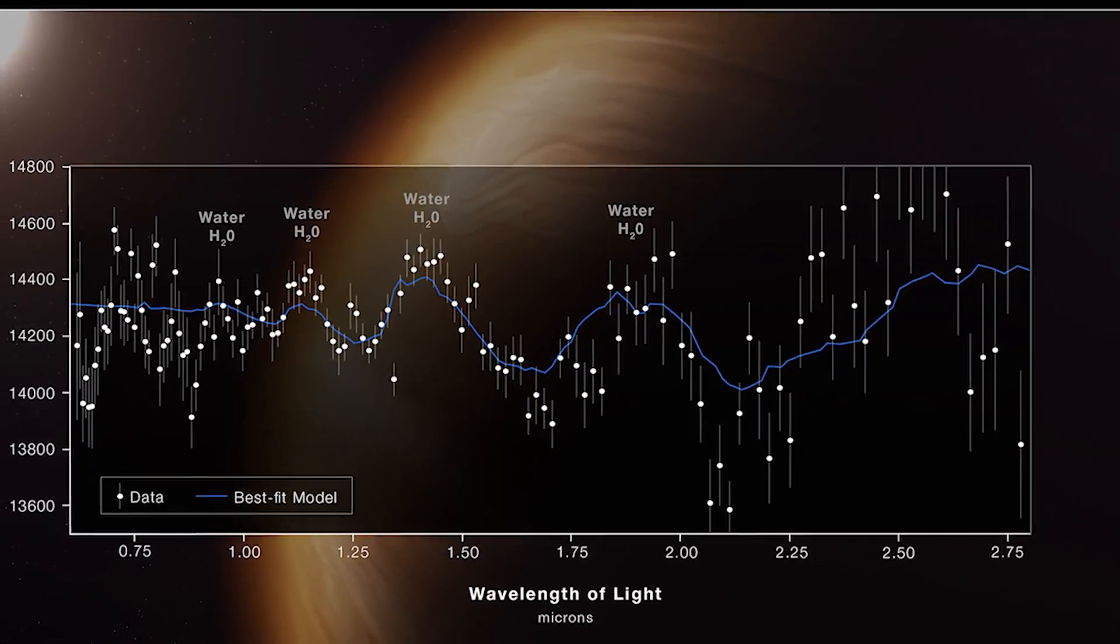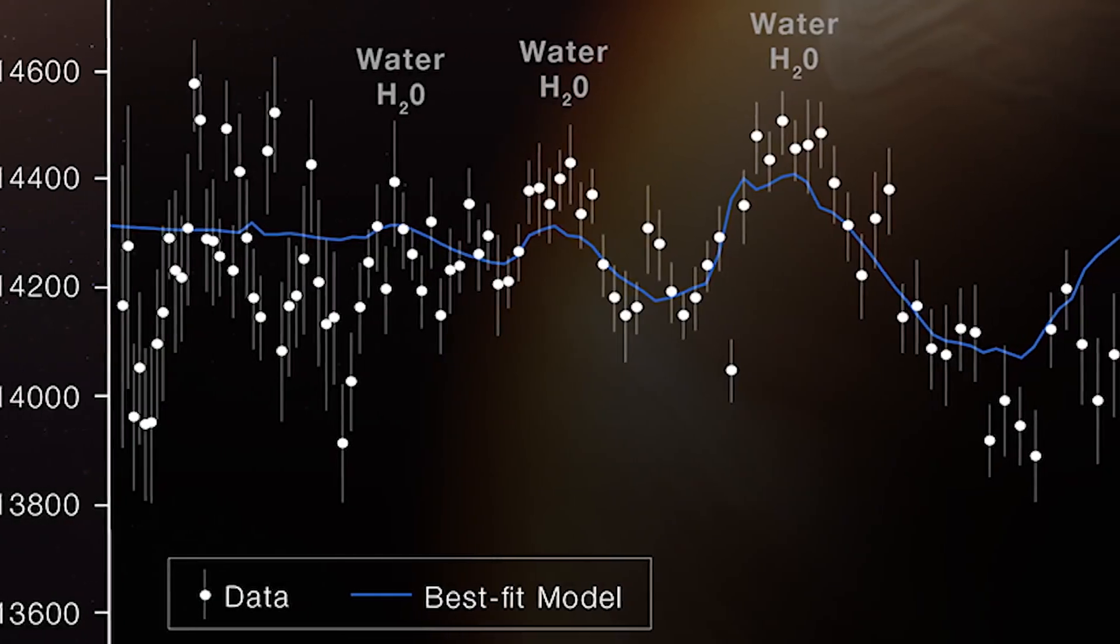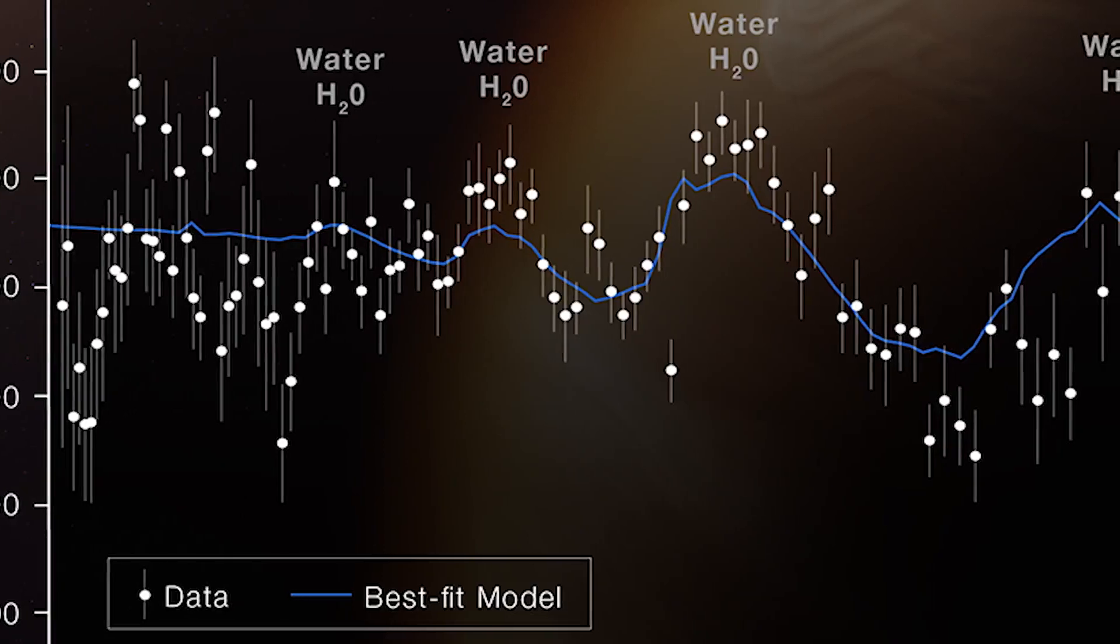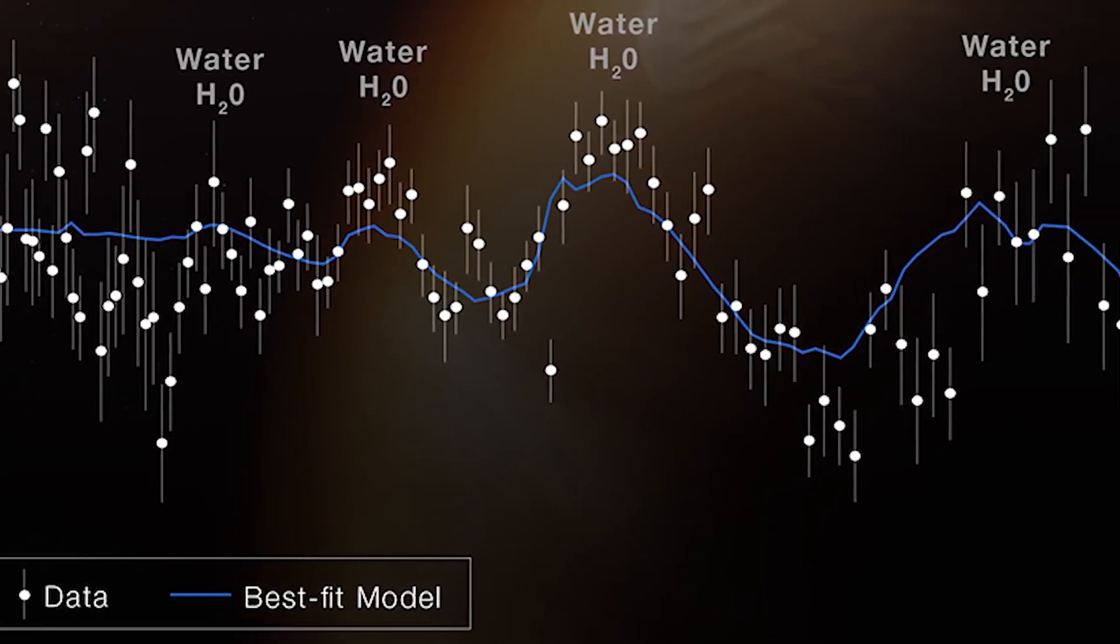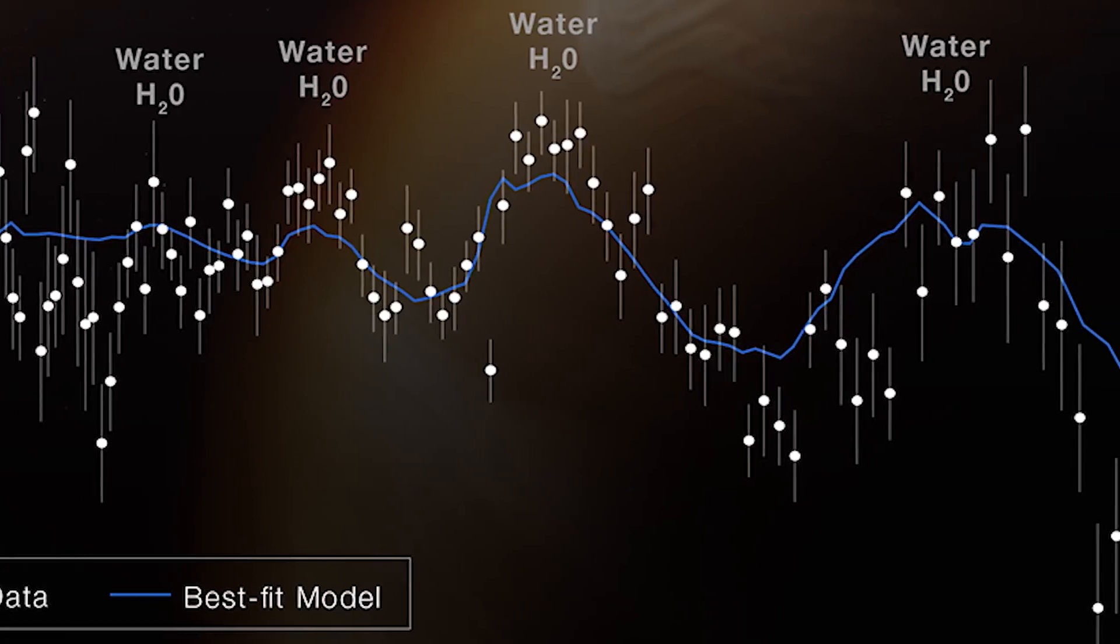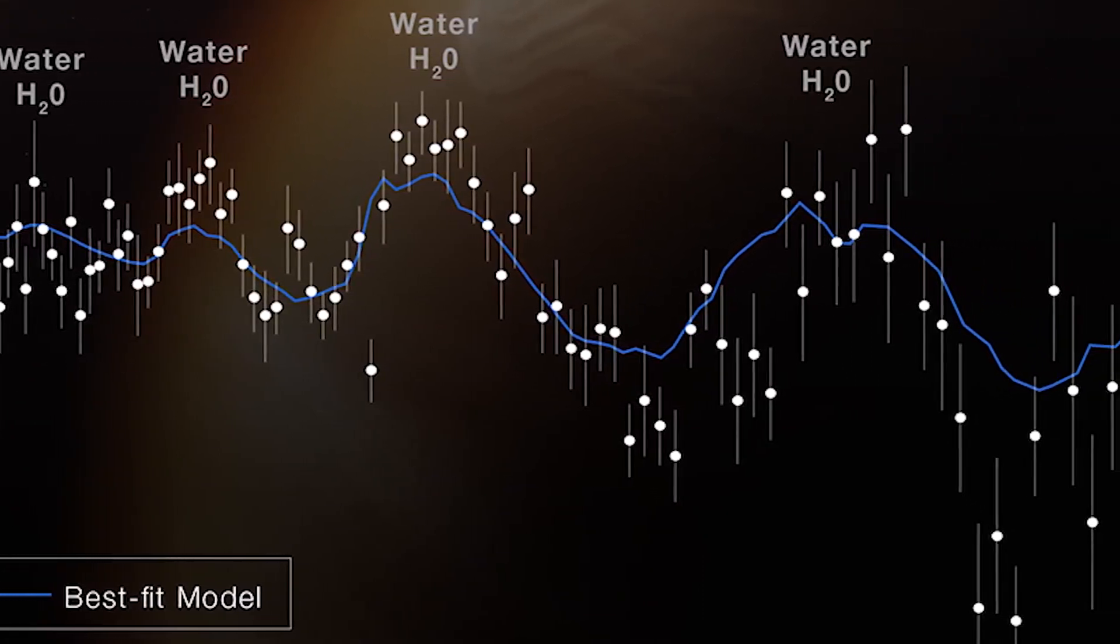The difference between the best-fit model shown here and the data reflects the additional work to be done in analyzing and interpreting the data and the planet. Although complete spectrum analysis will take additional time, it is possible to draw some preliminary conclusions. The labeled peaks in the spectrum indicate the presence of water vapor. The height of the water peaks, which is less than expected based on previous observations, is evidence of the presence of clouds that suppress the water vapor features.